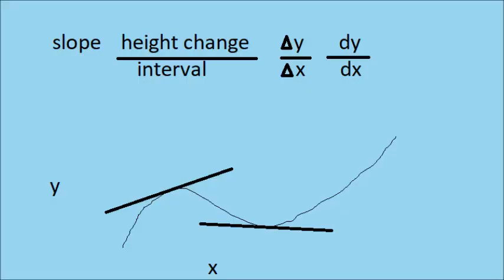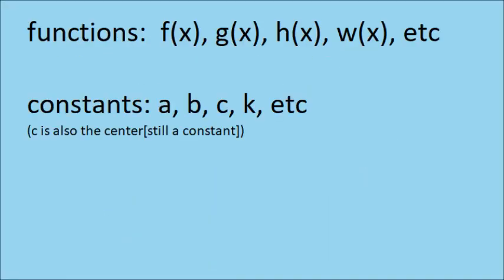So the slope is your delta y over delta x. f of x, g of x, h of x, all that, those are examples of functions. Constants are usually a, b, c, and k. They can also be other letters.